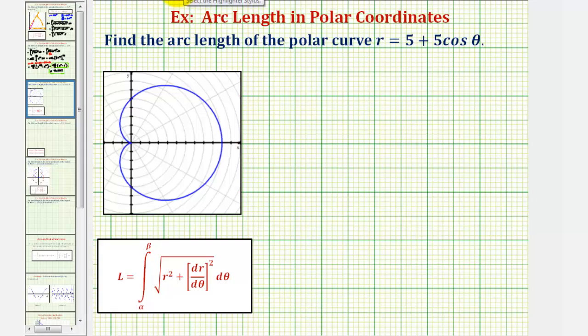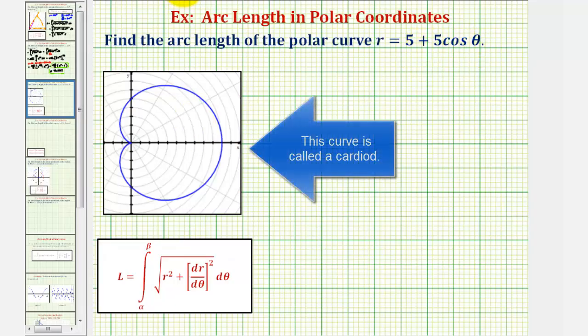We want to find the arc length of the polar curve given by r equals five plus five cosine theta, graphed here. So we're looking for the length of the entire curve.